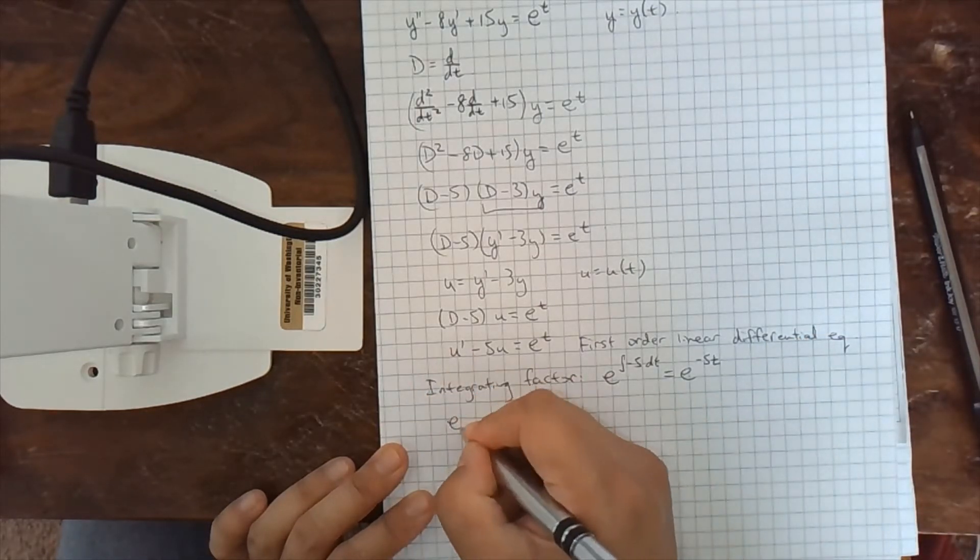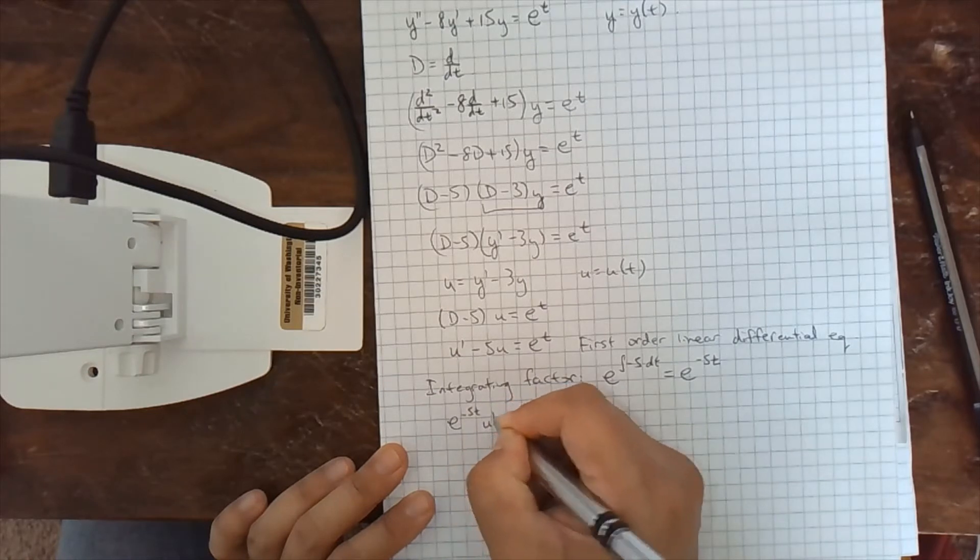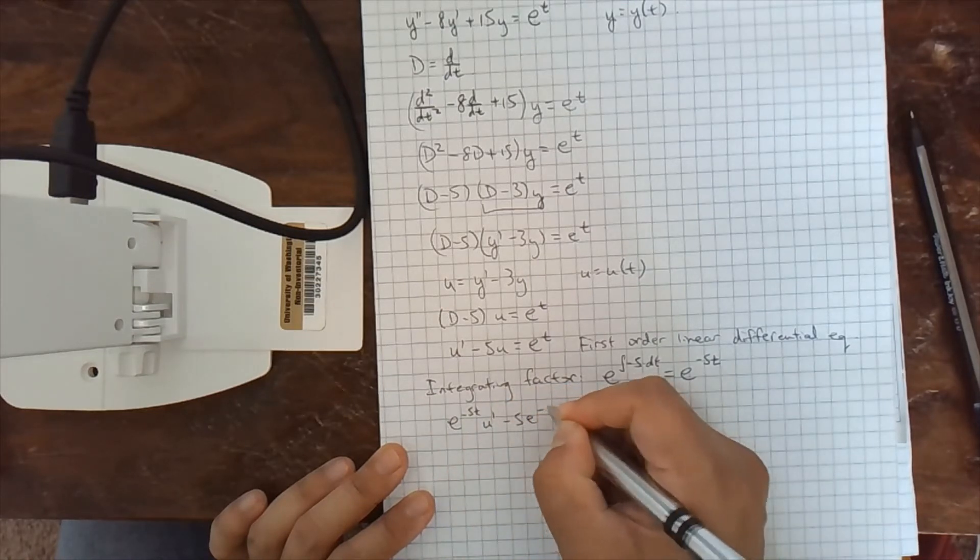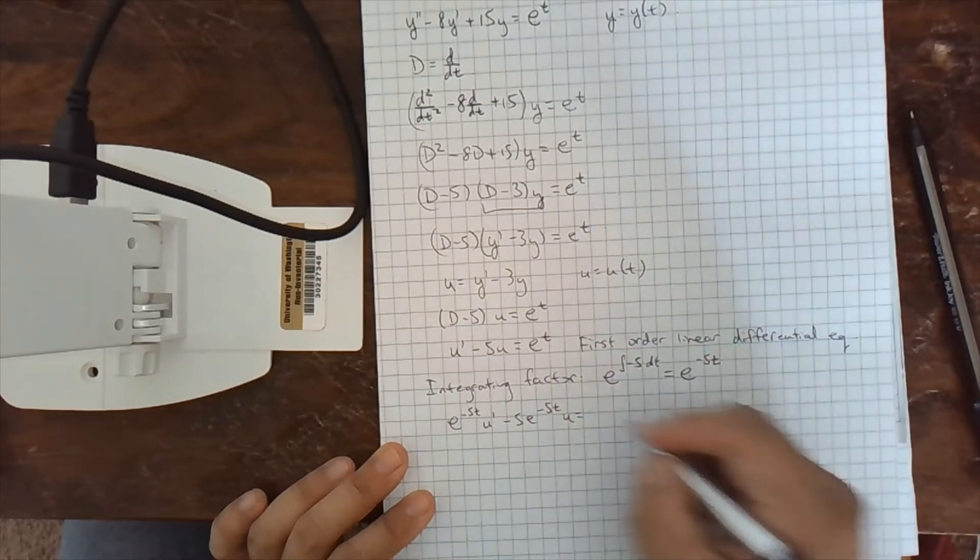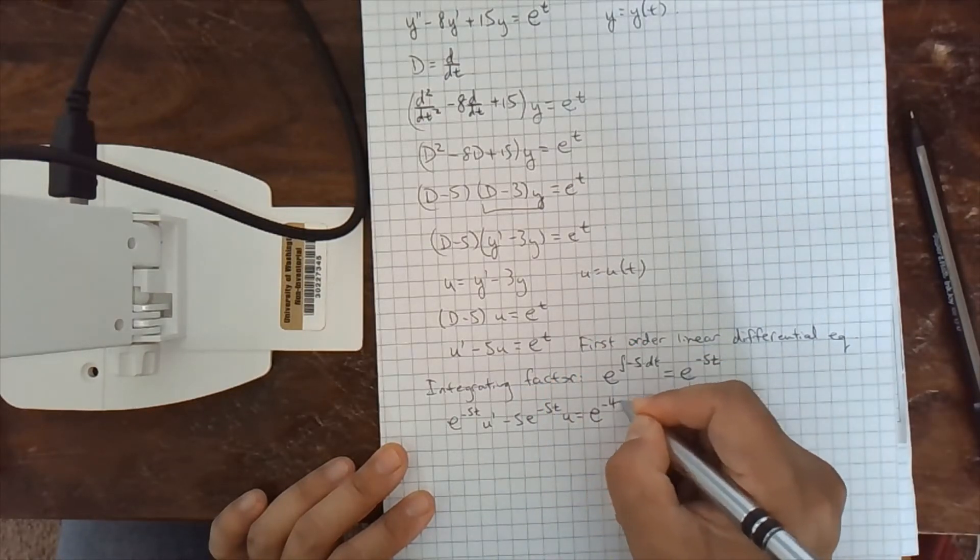So we're going to multiply both sides by e to the negative 5t. U prime minus 5 e to the negative 5t. U equals, and this is a total of e to the negative 4t. That's t minus 5t.